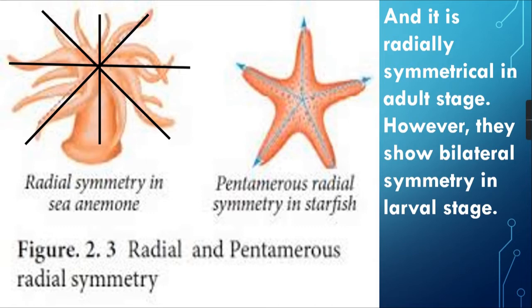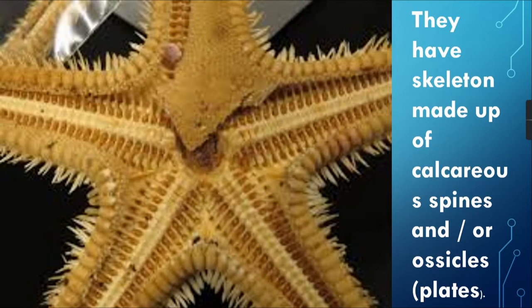In pentamerous radial symmetry, 'penta' means 5, referring to 5 arms. Starfish is called pentamerous. If you look at a starfish, there are 5 arms — 1, 2, 3, 4, and 5. So starfish shows pentamerous radial symmetry.